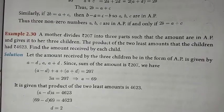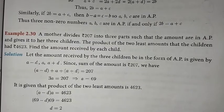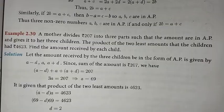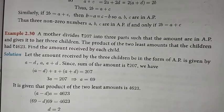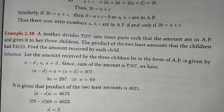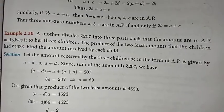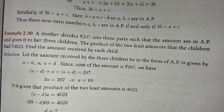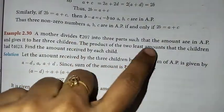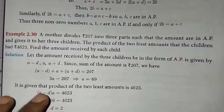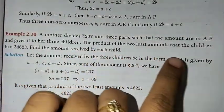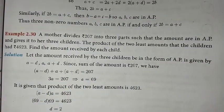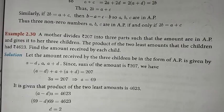The mother divides 207 rupees into 3 parts in AP. Since the amounts are in AP, we assume 3 consecutive terms. The sum of those 3 consecutive terms is 207. For the product condition, we need the 2 least terms — that is, the first two smallest terms and their product.